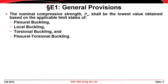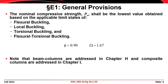The nominal compressive strength, P sub n, is the lowest value obtained based on the limit states of flexural buckling, local buckling, torsional buckling, and flexural-torsional buckling. The resistance factor used for all compressive limit states is 0.9, and for allowable stress design you would use a factor of safety of five-thirds. Beam columns are addressed in Chapter H under combined loads, and in Chapter I for composite sections with concrete and steel working together in compression.